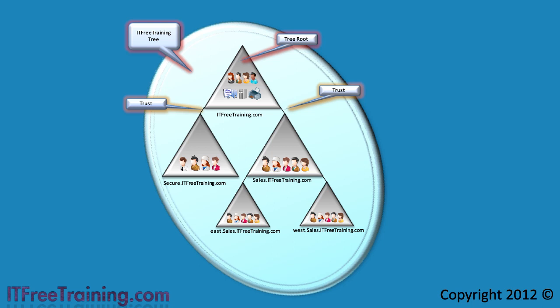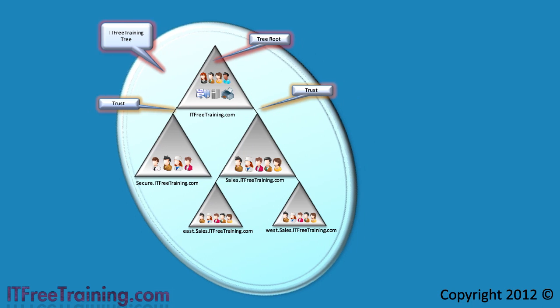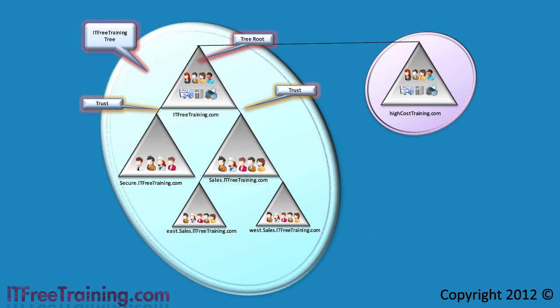These trust relationships allow members of each domain to access resources in any other domain assuming that they have access. The next question is what would happen when you add another domain that has a different namespace to the other domains. For example, if I added the domain highcosttraining.com, the new domain high cost training will be part of a new tree. I now have two trees: the IT Free Training tree and the high cost training tree.